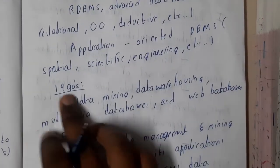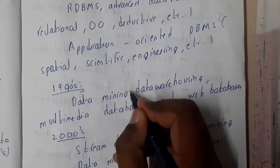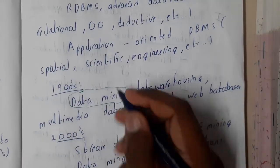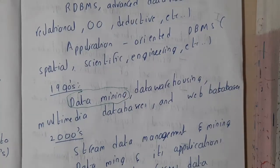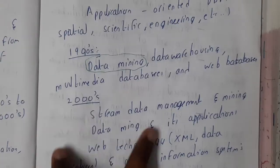In the 1990s, they started the concept of data mining. So they started using data mining to extract the useful information. They started storing the data in data warehouses, similarly multimedia databases and web-based.